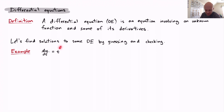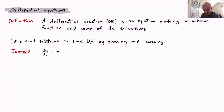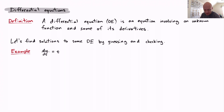Let's start with a fairly simple differential equation that, believe it or not, you have already seen and studied in Calculus 1. That equation is dy/dt equals t. So there's some unknown function y of t, and we know that its derivative dy/dt is equal to t.